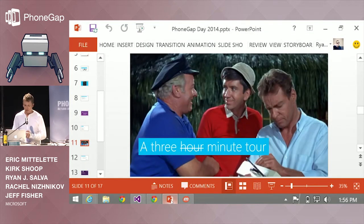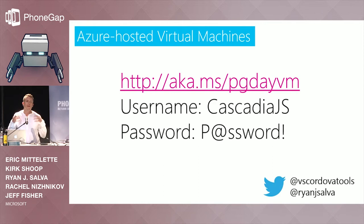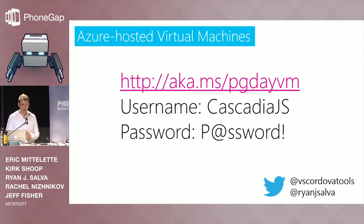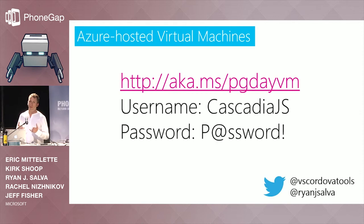That was the three-minute tour. If you have additional questions, I'd love to talk to you. For those who cannot wait to try this out, we've got about 70 different virtual machines — leftovers from Cascadia JS. There's a username and password; they're only good for about the next week. Search for 'Visual Studio Cordova virtual machine' and you'll find a blog post with instructions. The product team is also on Twitter at VS Cordova Tools. I hope you enjoy the rest of your conference.